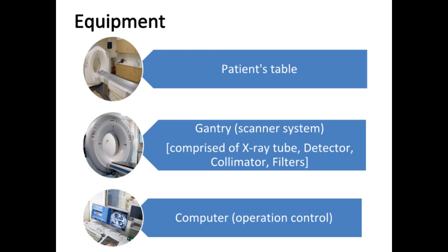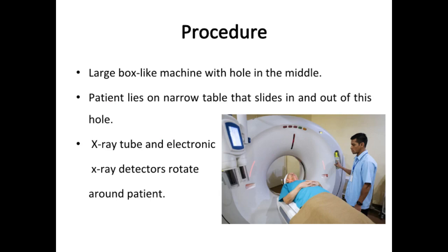The technologist begins by positioning the patient on the CT exam table, usually lying flat on the back. The machine looks like a large box-like machine with a hole in the middle. The patient lies on a narrow table that slides in and out of this hole; straps and pillows may be used to help maintain the correct position. The table will then move quickly through the scanner to determine the correct starting position, then move slowly through the machine as the actual CT scanning is performed.